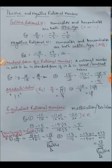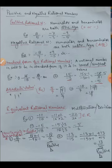Equivalent rational numbers work just like equivalent fractions. We can write equivalent rational numbers by two methods: multiplying or dividing both the numerator and denominator by the same number. The key condition is that you must apply the same number to both the numerator and denominator.